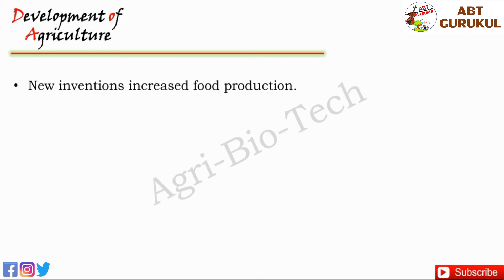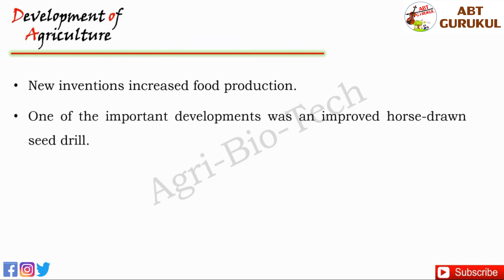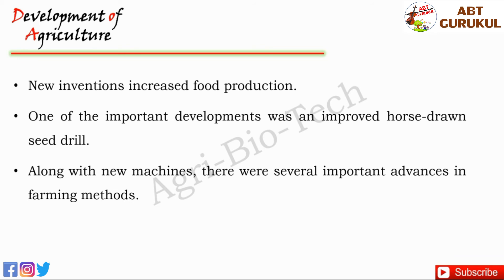New agricultural inventions dramatically increased food production. One of the most important of these developments was an improved horse-drawn seed drill. Until that time, farmers sowed seeds by hand. Along with new machines, there were several important advances in farming methods.